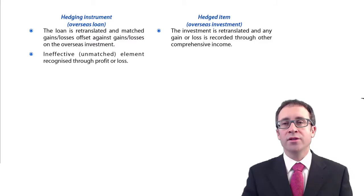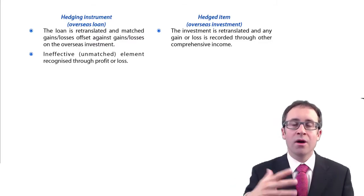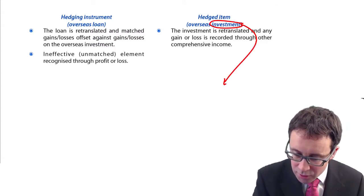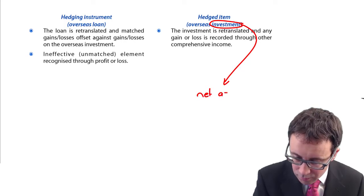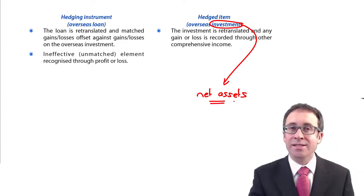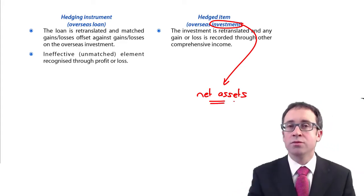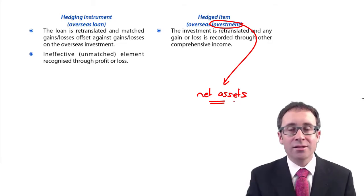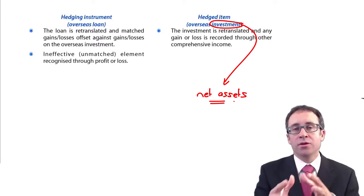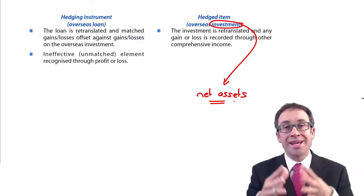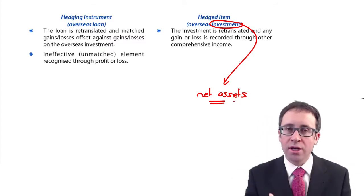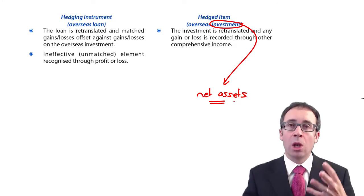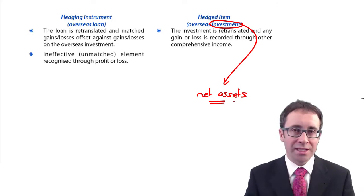The issue is that when you translate that overseas investment — and by overseas investment we're effectively talking about the net assets — those net assets of the overseas subsidiary are going to be translated every reporting date at the closing rate. We translate all the assets and all the liabilities of the overseas subsidiary at the closing rate, which results in gains and losses on translation of those overseas net assets.